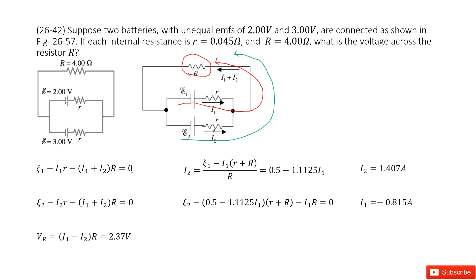And then the current goes through the resistor R. So minus I2 times small r, and minus (I1 plus I2) times capital R equals zero.